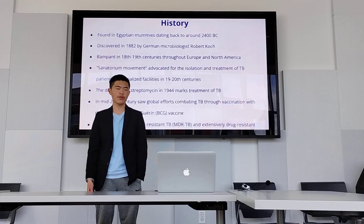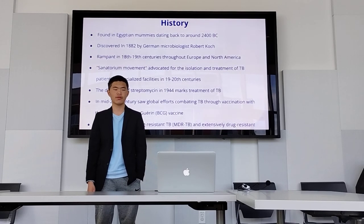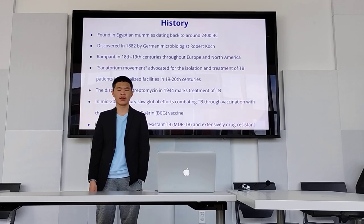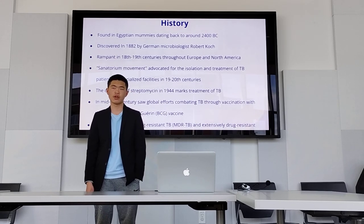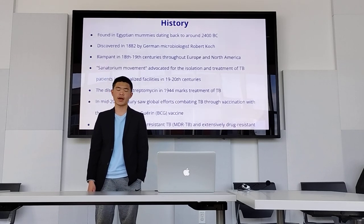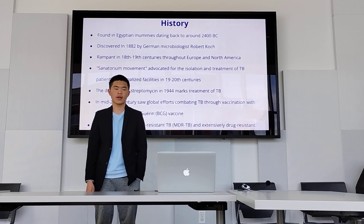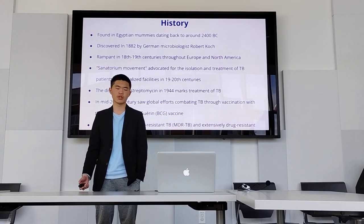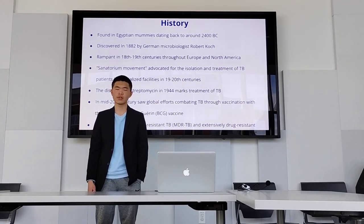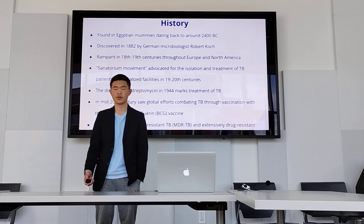We originally found evidence of TB in mummies dating back to around 2400 BC. It was discovered by Robert Koch in 1882, and it was rampant in the 18th to 19th centuries. Eventually there was a sanatorium movement which advocated for the isolation and treatment of TB patients in specialized facilities. We eventually discovered streptomycin, which was used to treat TB, and started developing the BCG vaccine. Recently there has been the emergence of multidrug-resistant and extensively drug-resistant tuberculosis.